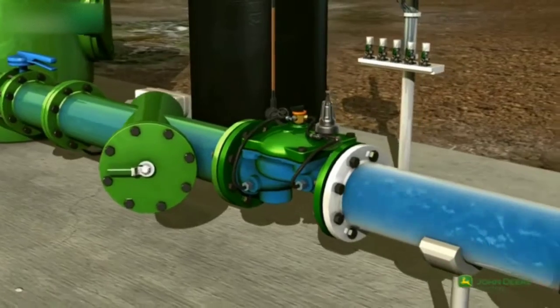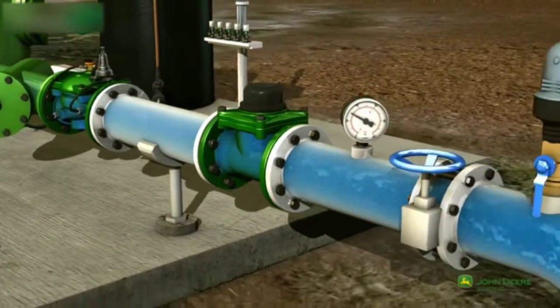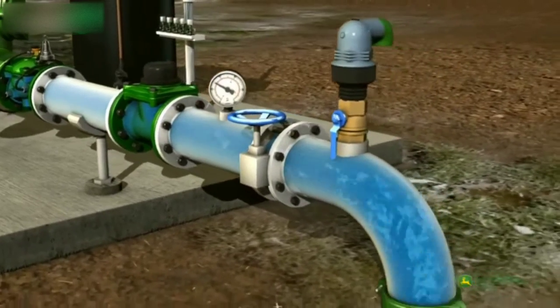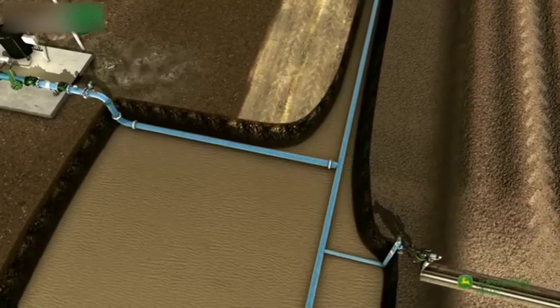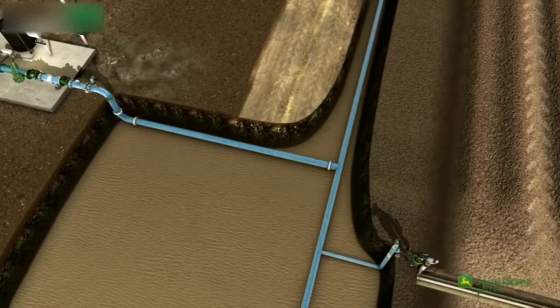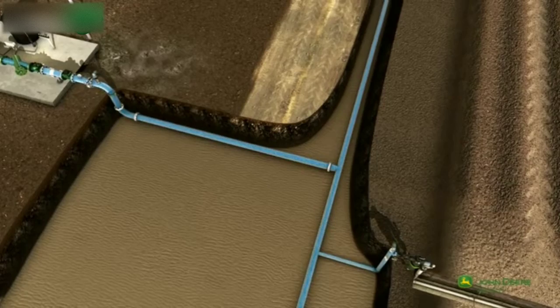The control valve on the main line regulates the water pressure as it moves downstream into the field sections. The valve maintains the required pressure and ensures that each field section receives the correct amount of water.